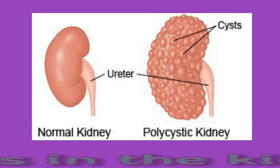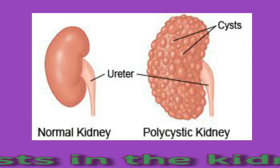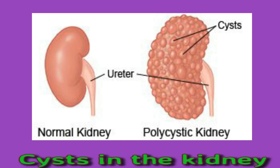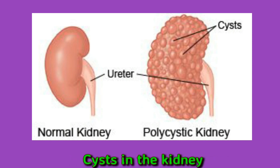Cysts in the kidney: benign or non-cancerous cysts are fluid-filled sacs that can form in one or both kidneys and do not usually cause symptoms. If a cyst gets too big, bursts, or becomes infected, it can cause kidney pain and symptoms including dull pain in the upper abdomen, side or back, fever, tenderness, or sharp pain.